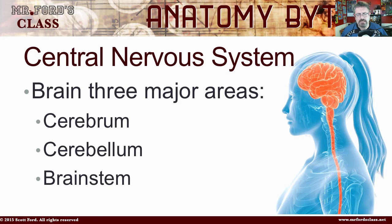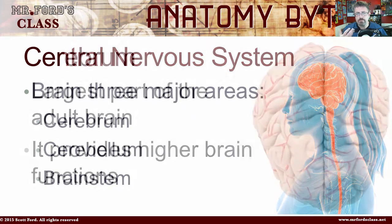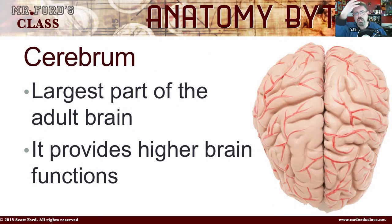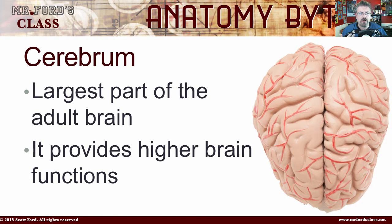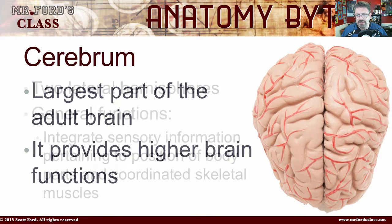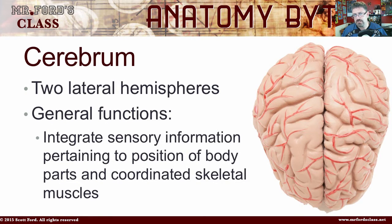The cerebrum is the big cauliflower part — that's the largest part of the adult brain. That's what people commonly think of when they're looking at or talking about the brain. It provides higher brain functions and is made of two lateral hemispheres, so it's made of a left side and a right side.